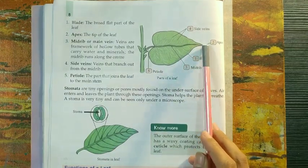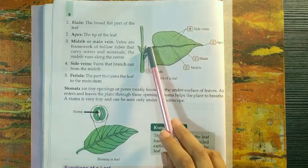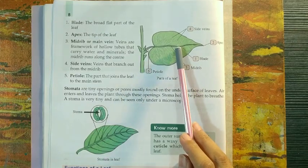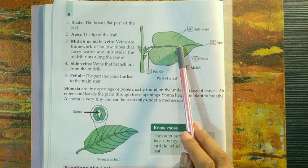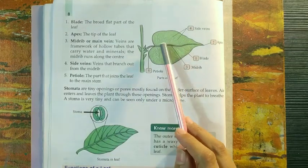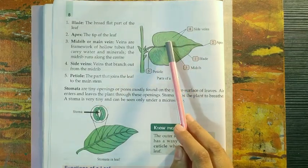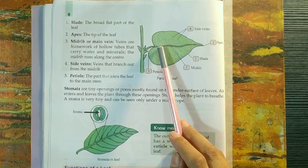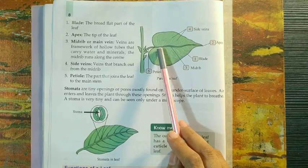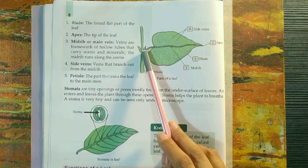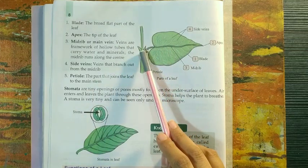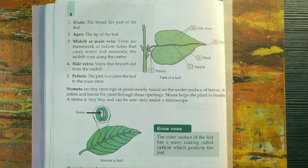The tip of a leaf is called the apex. The middle line is known as the midrib or main vein. It is made up of hollow tubes which carry minerals and water. The tiny tubes branching out from the midrib are known as side veins. The stalk which joins a leaf to the stem of the plant is known as the petiole.